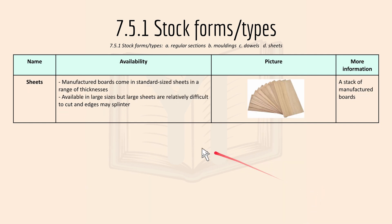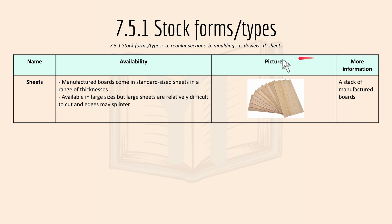Then we have sheets. Manufactured boards come in standard size sheets in a range of thicknesses. They are available in large sizes, but large sheets are relatively difficult to cut and edges may splinter. Here's a big board of sheets — basically a stack of manufactured boards.